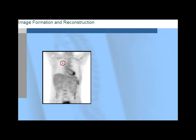Now let's examine how PET images are formed and reconstructed. To obtain the unique functional images that PET offers, raw data must be reconstructed. Thanks to a variety of technological advancements, PET image quality has significantly improved. In addition, the criterion for determining a good PET image is totally subjective to the user.